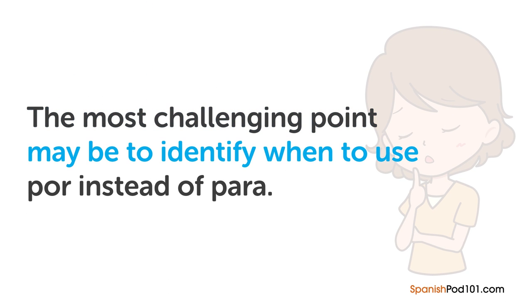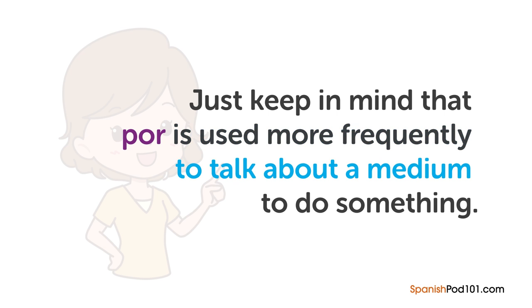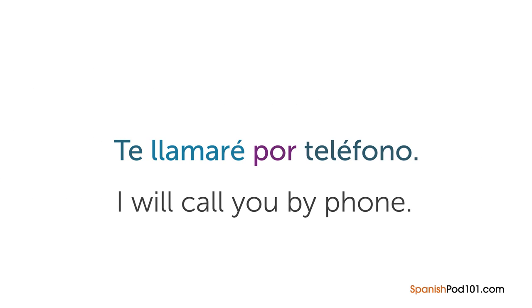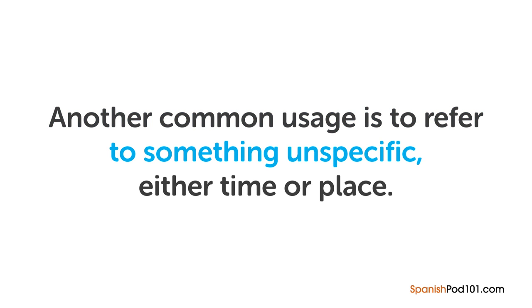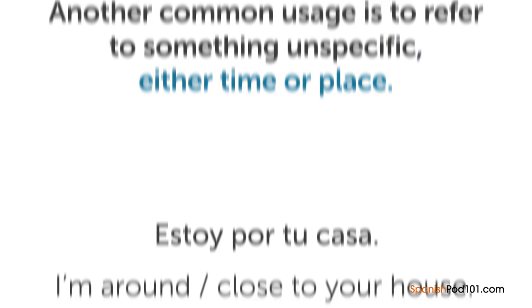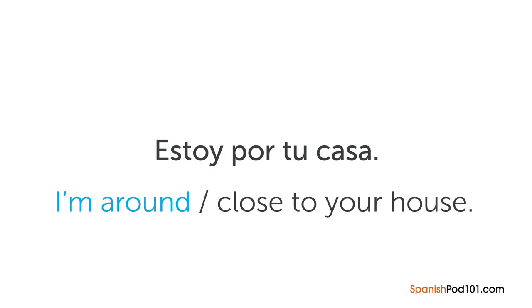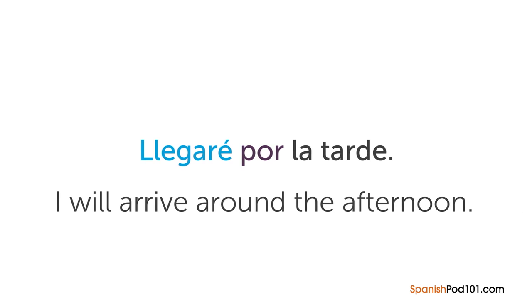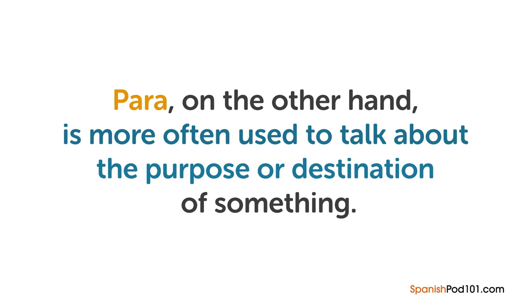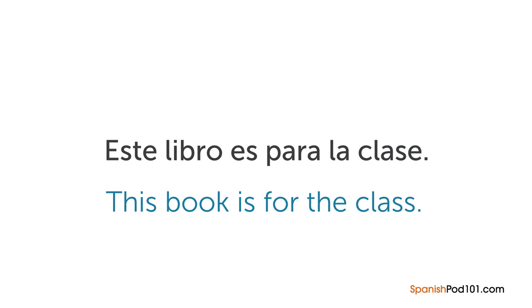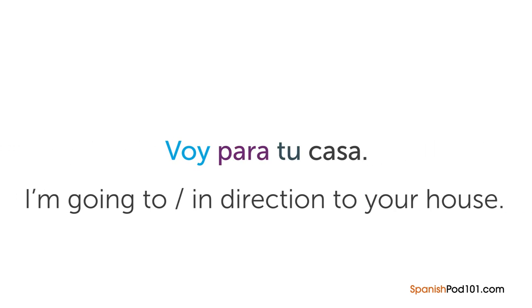The most challenging point is identifying when to use por instead of para. Por is used more frequently to talk about a medium — 'Te llamaré por teléfono' meaning 'I will call you by phone' — and to refer to something unspecific in time or place: 'Estoy por tu casa' meaning 'I'm around, close to your house,' or 'Llegaré por la tarde' meaning 'I will arrive around the afternoon.' Para, on the other hand, is more often used to talk about the purpose or destination: 'Este libro es para la clase' or 'Voy para tu casa' meaning 'I'm going toward your house.'